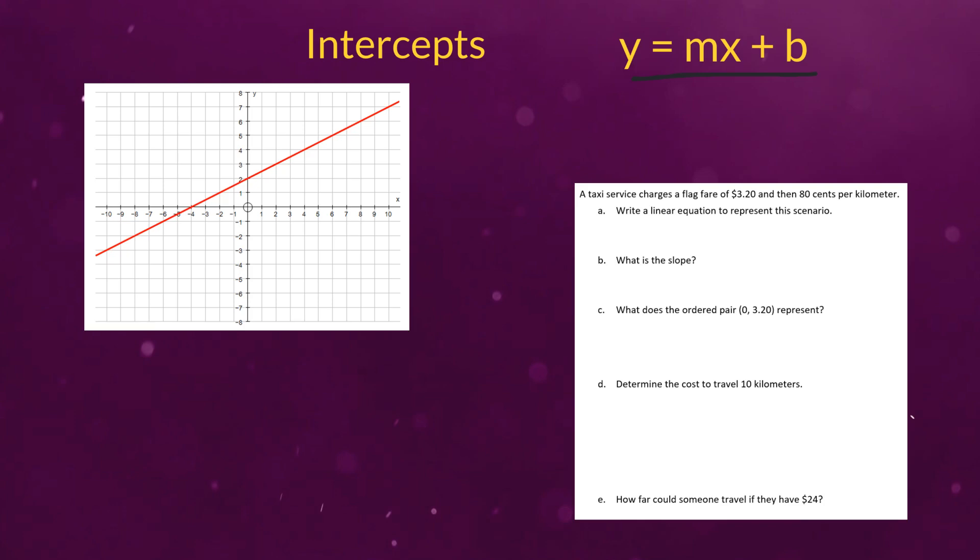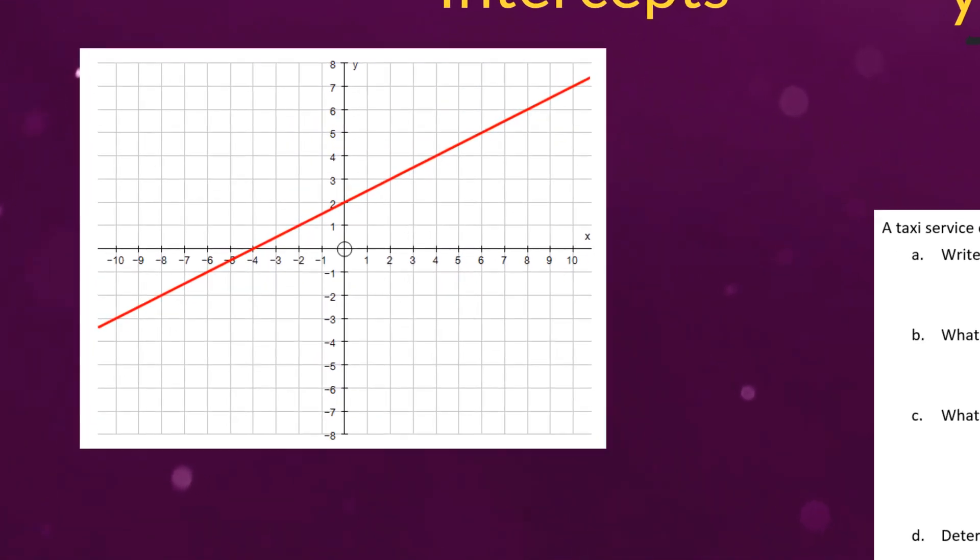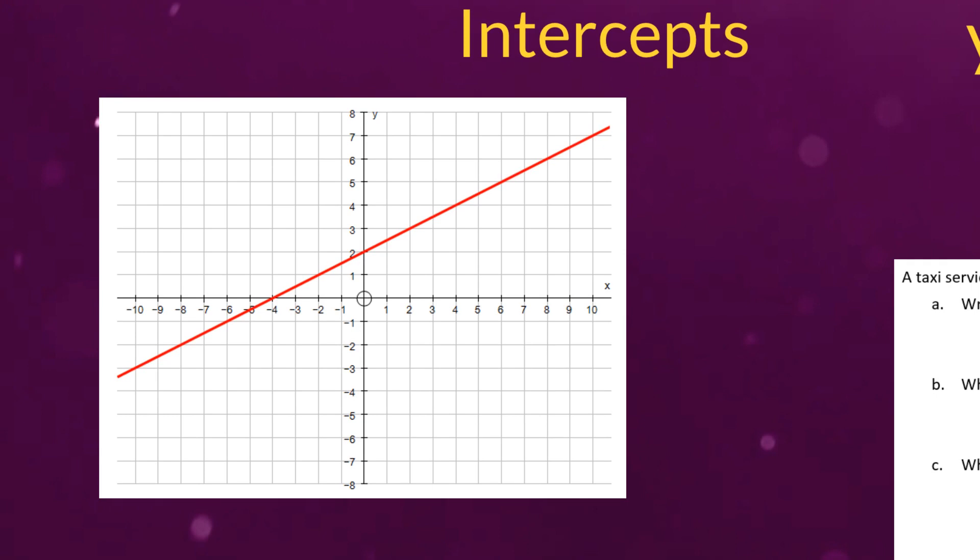So getting started, visually to figure out what intercepts are is that they are the points where a graphed line crosses either the x-axis or the y-axis. So visually that's pretty easy to spot.